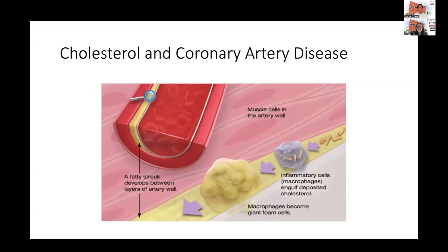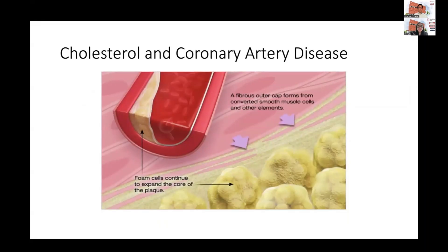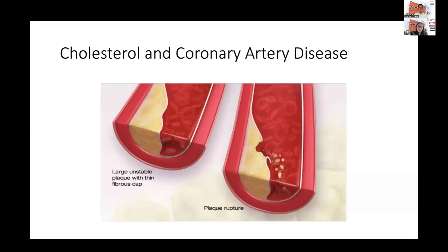The process starts out as a fatty streak. The foam cells continue to expand the core of the plaque the longer the fatty streak is there. A fibrous outer cap also forms from converted smooth muscle cells and other elements, giving rise to a cholesterol plaque. In a very unstable plaque, you'll see a large area of disease but only a very thin fibrous cap. These types of plaques are very prone to rupture, which can give rise to a heart attack.